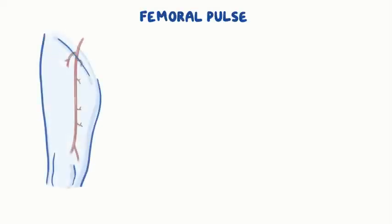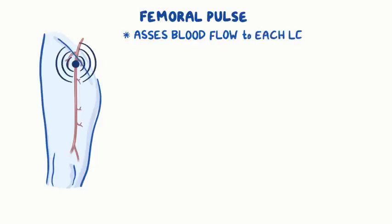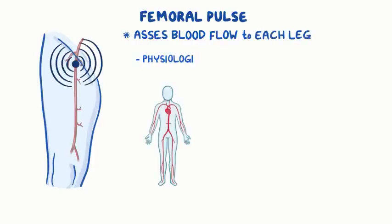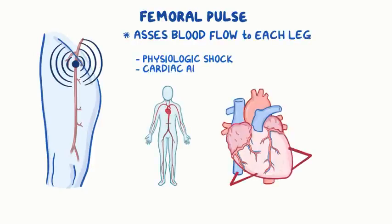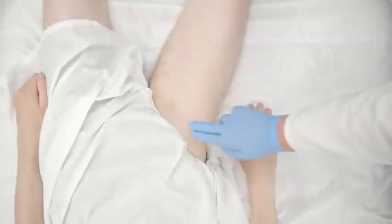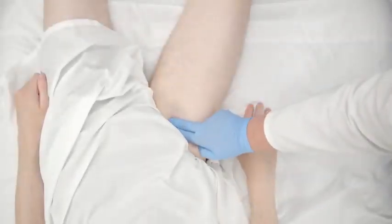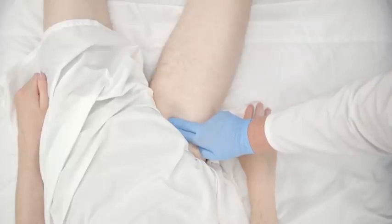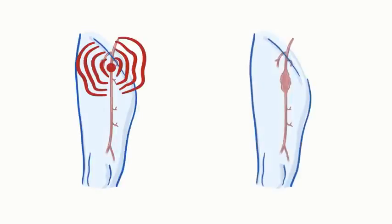Now let's take Fred's femoral pulse. The femoral pulse is used to assess blood flow in each leg, or during physiological shock or cardiac arrest when other pulses are not palpable. Place your first two fingers below the inguinal ligament, midway between the pubic symphysis and the anterior superior iliac spine. An exaggerated femoral pulse is characteristic of femoral aneurysm.